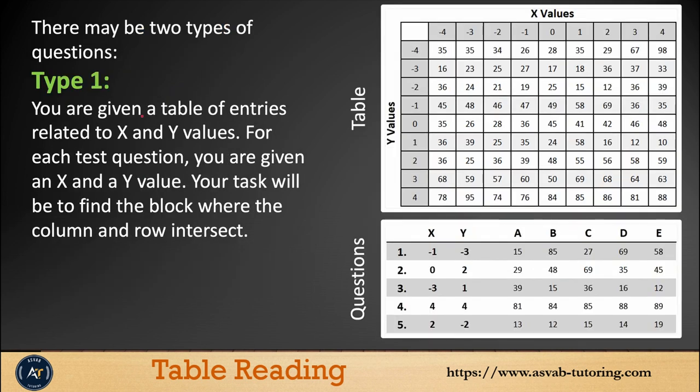There are mainly two types of questions. Type 1: you will see an X and Y grid with values. You could see here you have negative 4 to positive 4 on the X axis and Y axis you have negative 4 to positive 4. Here are the questions - X and Y coordinates for questions 1, 2, 3, 4, 5, with answer options A, B, C, D, or E. What do you have to do? You have to take this X coordinate and Y coordinate and find the intersecting point.